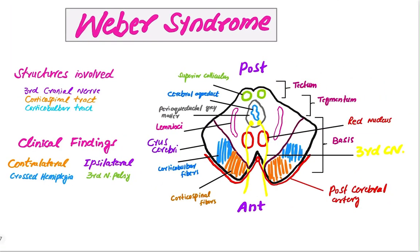This is the cross-section of the midbrain at the level of the superior colliculus. This is the anterior part and this is the posterior part. This portion is the tectum, this portion is the tegmentum, and this portion is called the base. These structures are the superior colliculus, this is the cerebral aqueduct, this is the periaqueductal gray area, and this is the lemniscus.